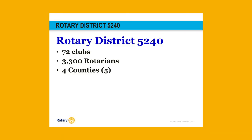Our specific district is the one I'm going to focus on because I think it's a good example for everybody to understand, especially those in District 5240. There are 72 clubs in this district, a total of 3,300 Rotarians. That number has fluctuated anywhere from 32 up to close to 4,000 at peak times.